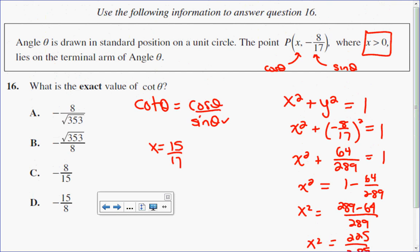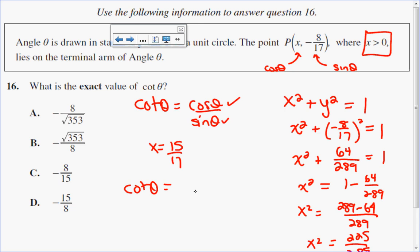Now I know cosine and sine. Cotan is going to be cosine 15 over 17 divided by sine, which is negative 8 over 17.